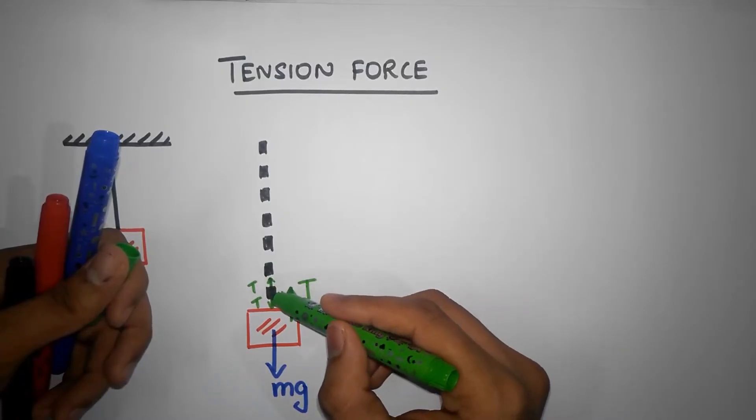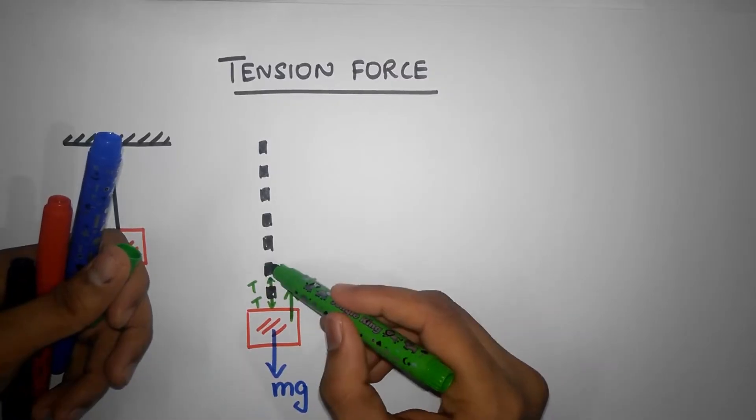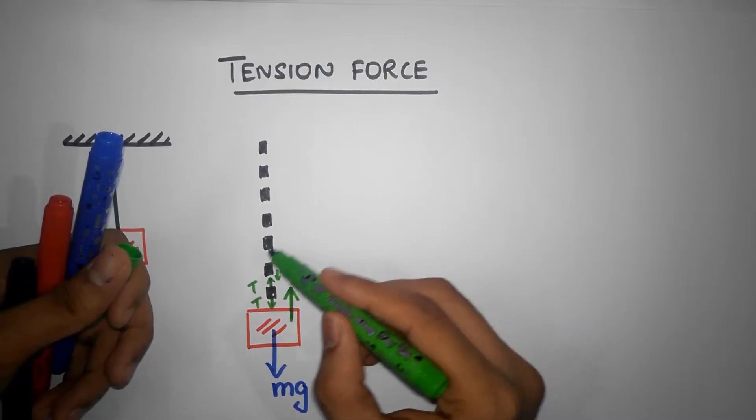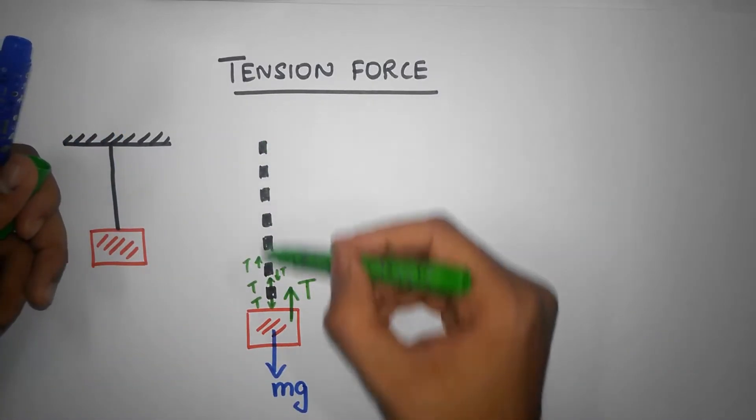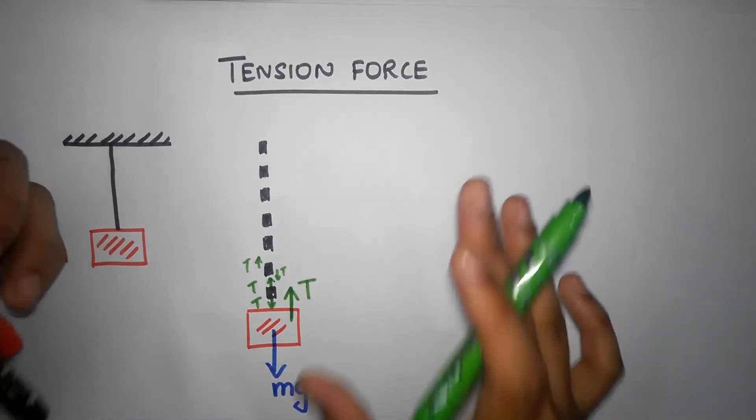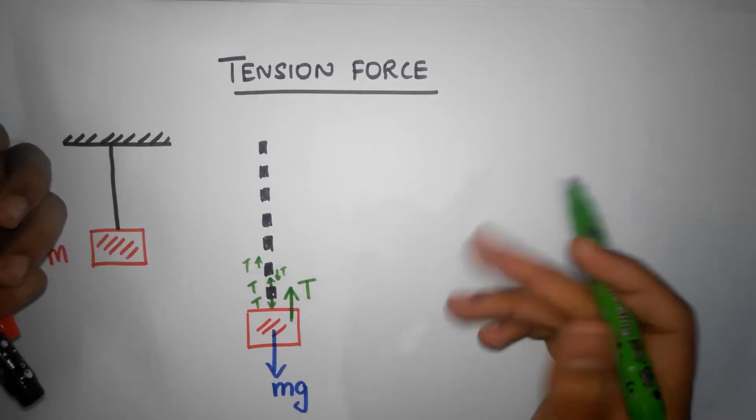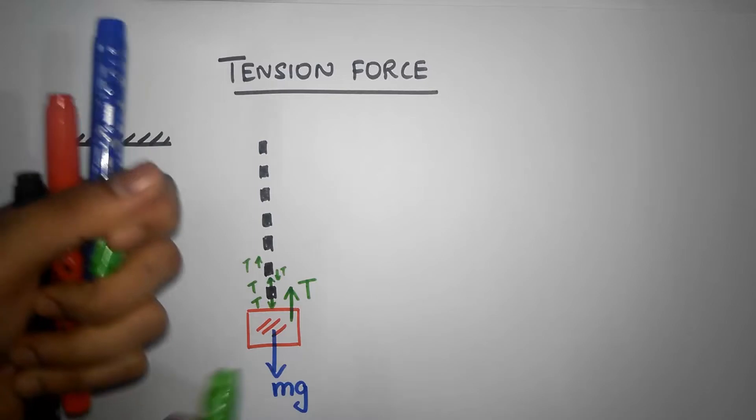Since this guy is pulling this fellow up, this fellow will pull this guy down. So there's a tension force T acting down on this fellow, and similarly this guy will pull him up with the tension force T. Notice that everywhere the tension is going to remain exactly the same, T. That's the whole idea behind the tension force. Notice that the tension force is a pulling force. Each bit of the string is being pulled.